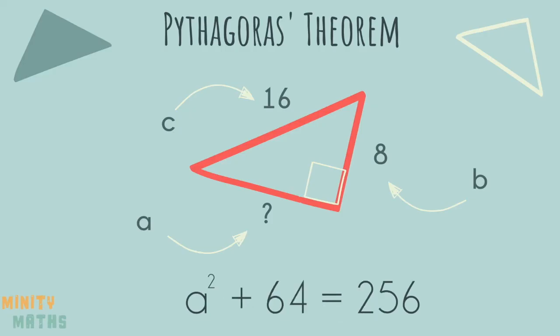So again we square the numbers but this time we have to rearrange the formula to get a squared on its own side of the equal sign. Therefore a squared equals 192. So then we square root 192 to find the answer.